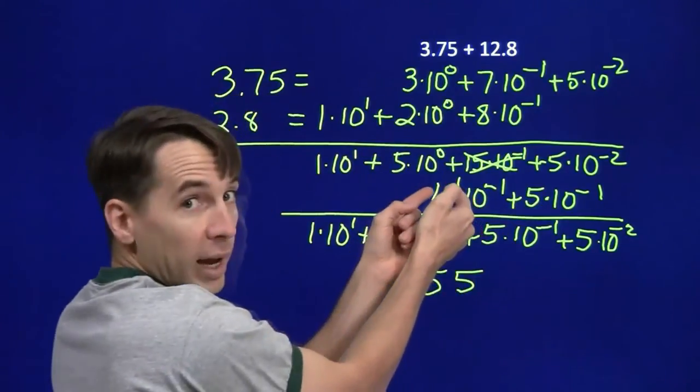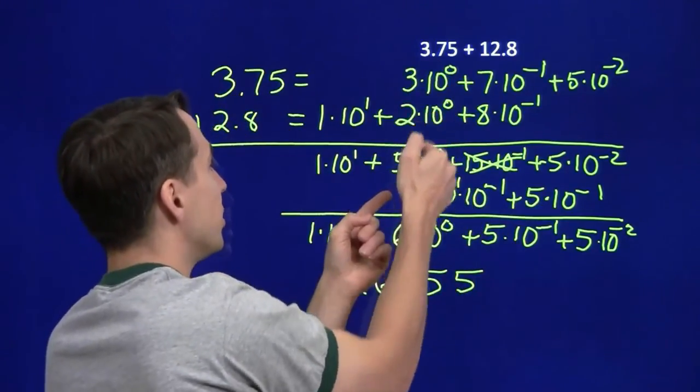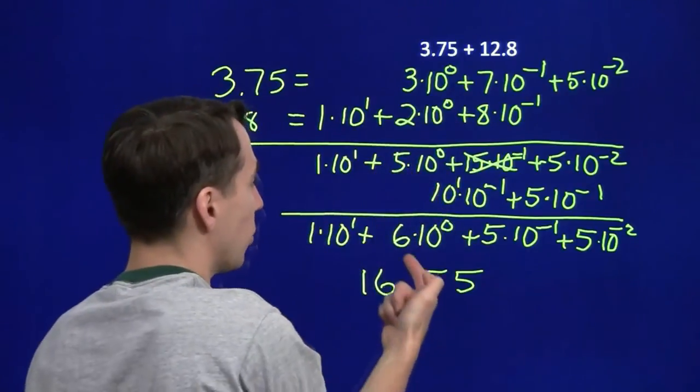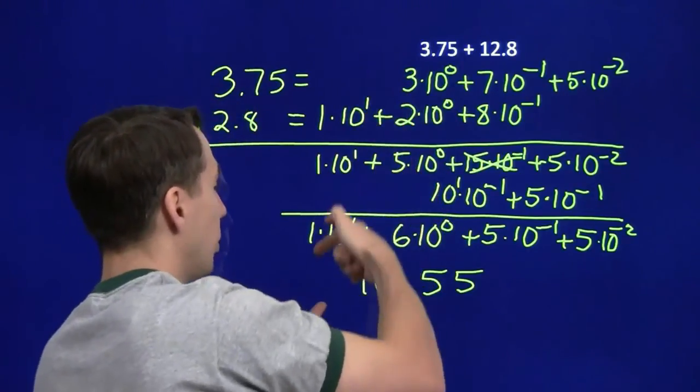We took this extra 1 here, combined it with the 3 ones and the 2 ones. That gave us 5. 5 plus the extra 1 gives us 6. And then we brought down our tens.